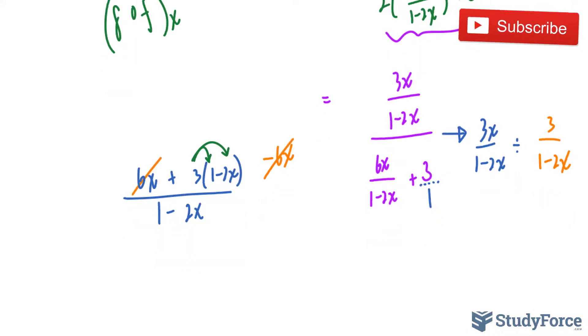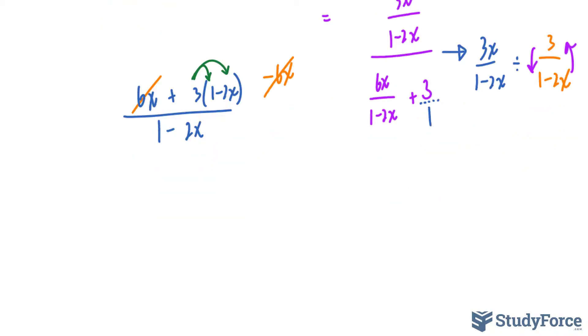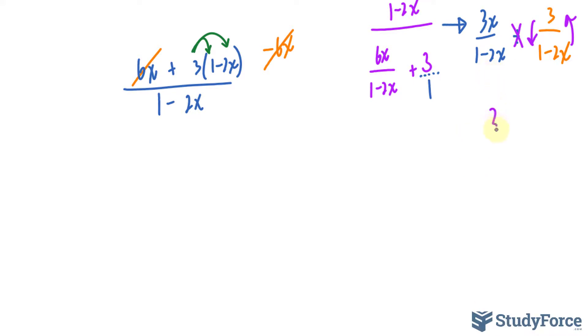To divide fractions out, we will reciprocate the second fraction and change that to multiplication. So I have 3x bracket 1 minus 2x. And at the bottom, 3 times 1 minus 2x. And just as expected, cancel, cancel, these cancel, we end up with only x.